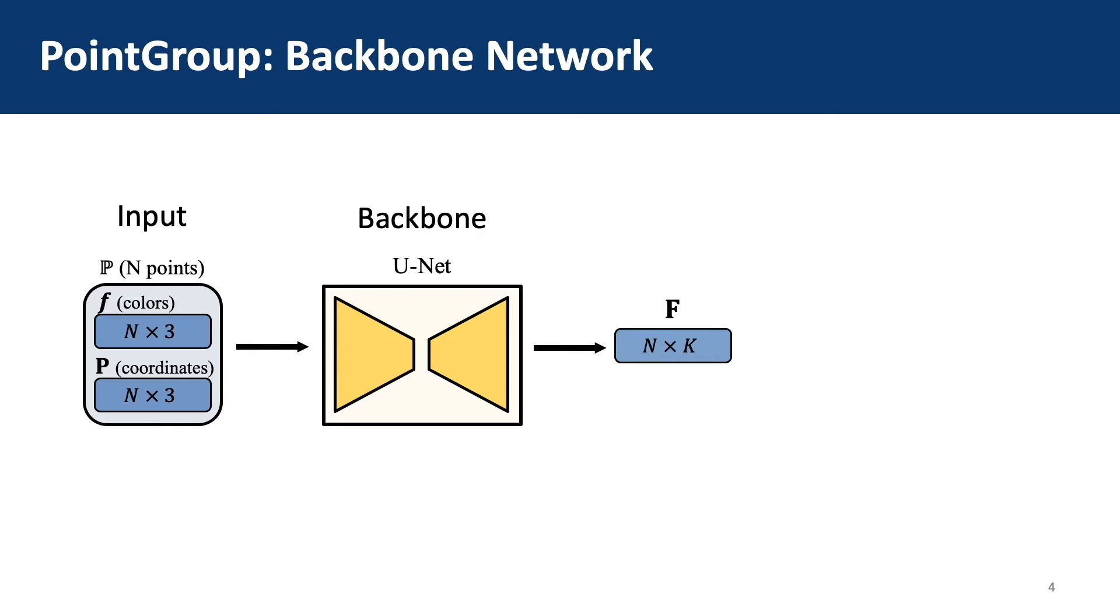We first use a backbone network to extract per-point features of the input point cloud. We construct a U-Net with sparse convolution to extract contextual and geometric information for each point.